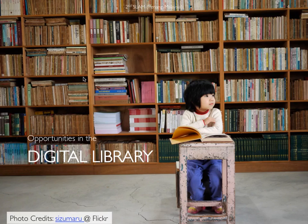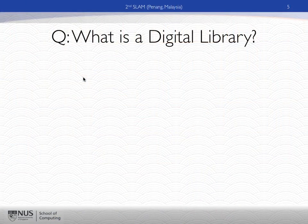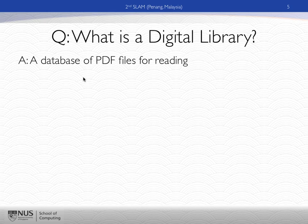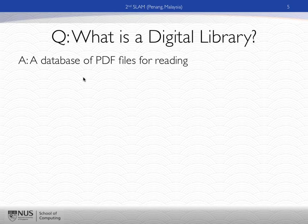I'm going to talk about opportunities in the digital library for this type of work. Take a minute to think about your favorite digital library — what is it and what do you do with it? When I survey students in my class, the answer they give is: a database of PDF files for reading. As a natural language processing researcher, that really irritates me, because PDF files are just files — there's actually a lot of knowledge in those files. Why are we treating them as atomic elements in a database? We have papers from search results, but we don't introspect what's in those papers. Our machines only search by abstract and title words. That's about it.